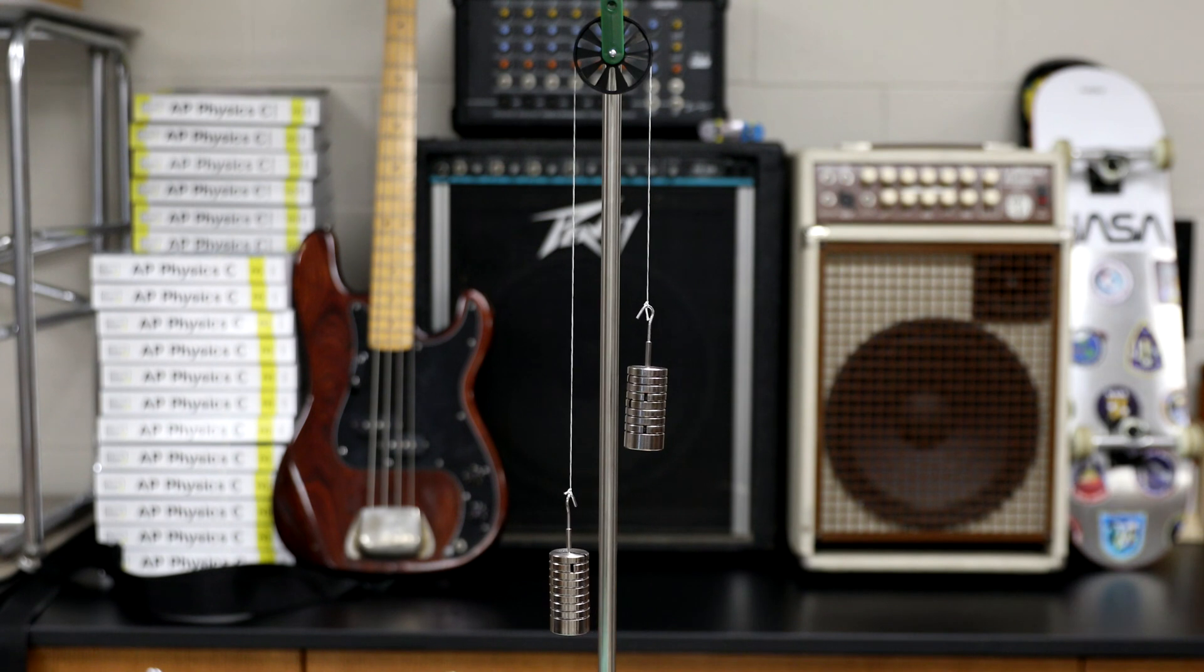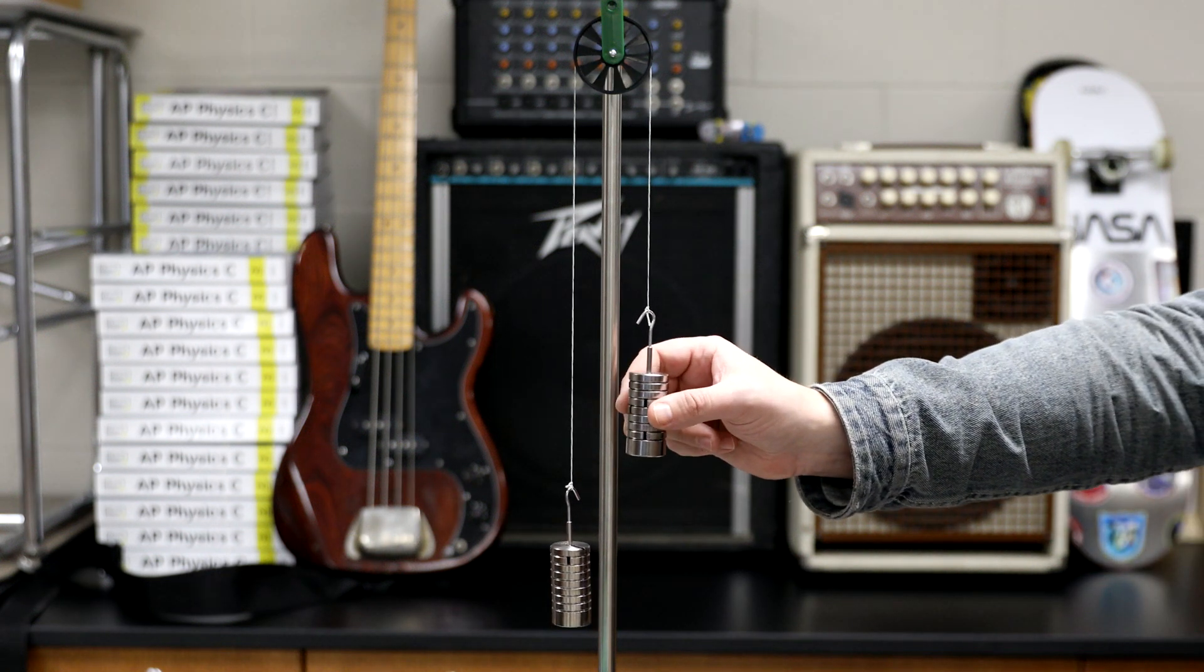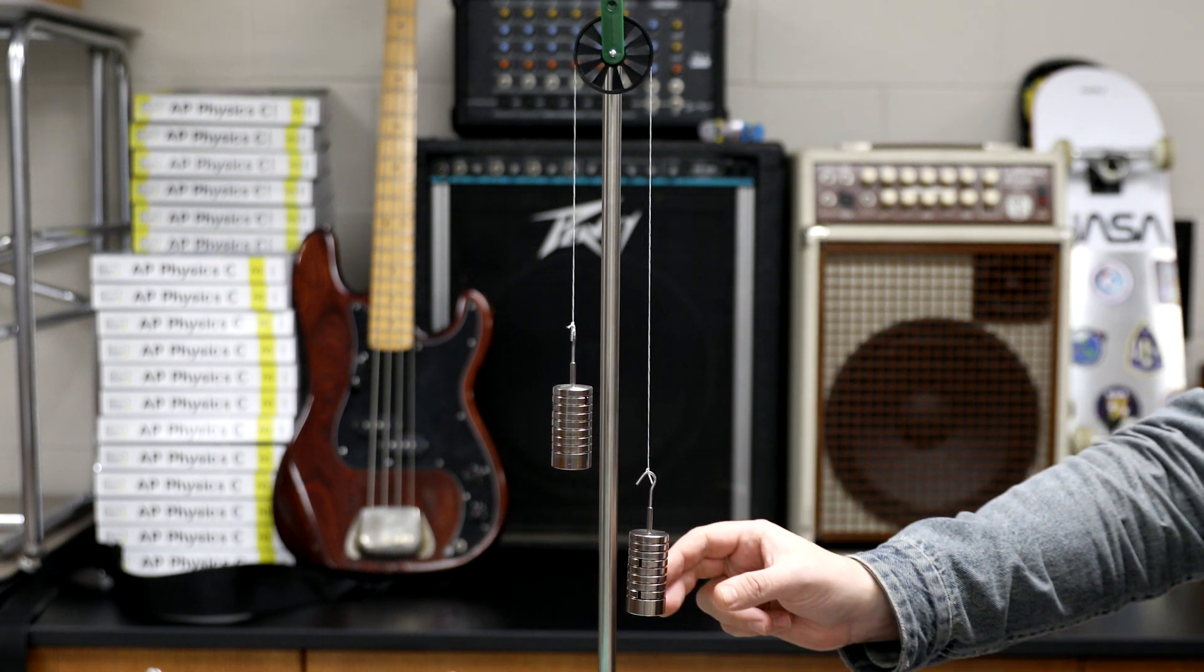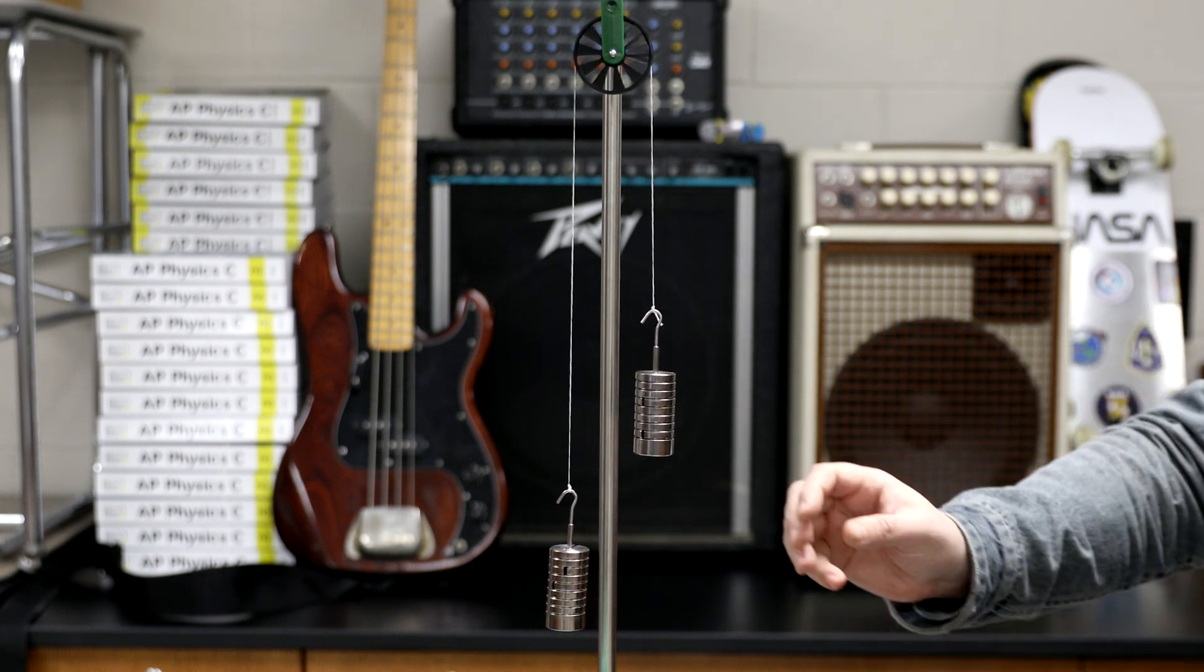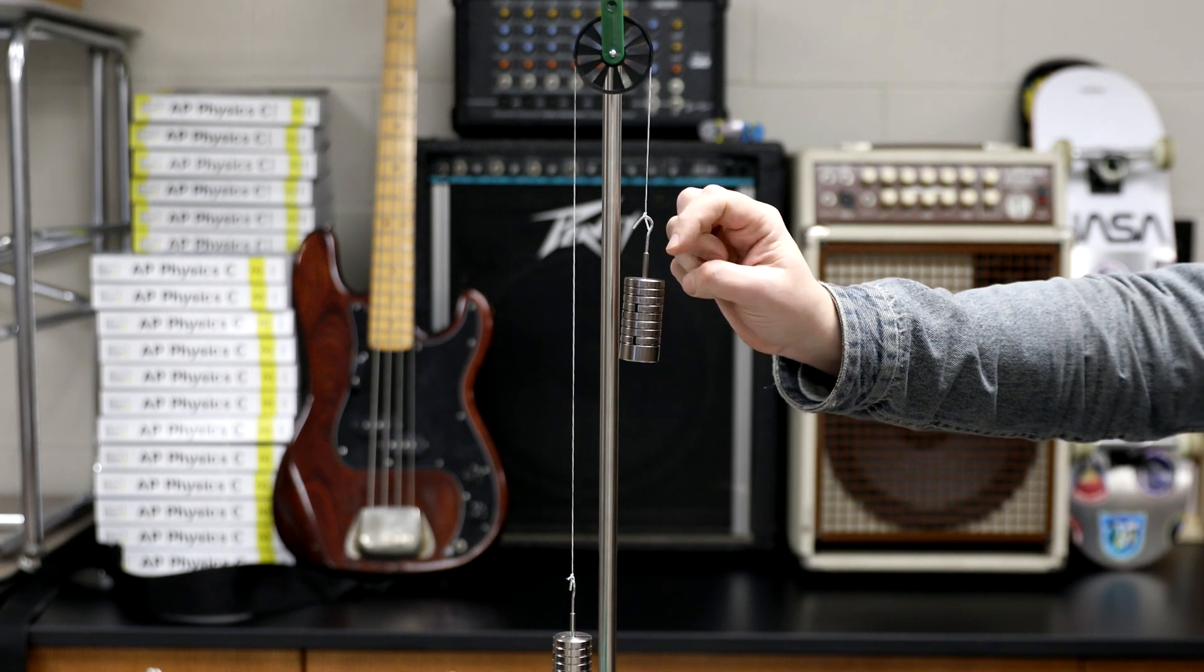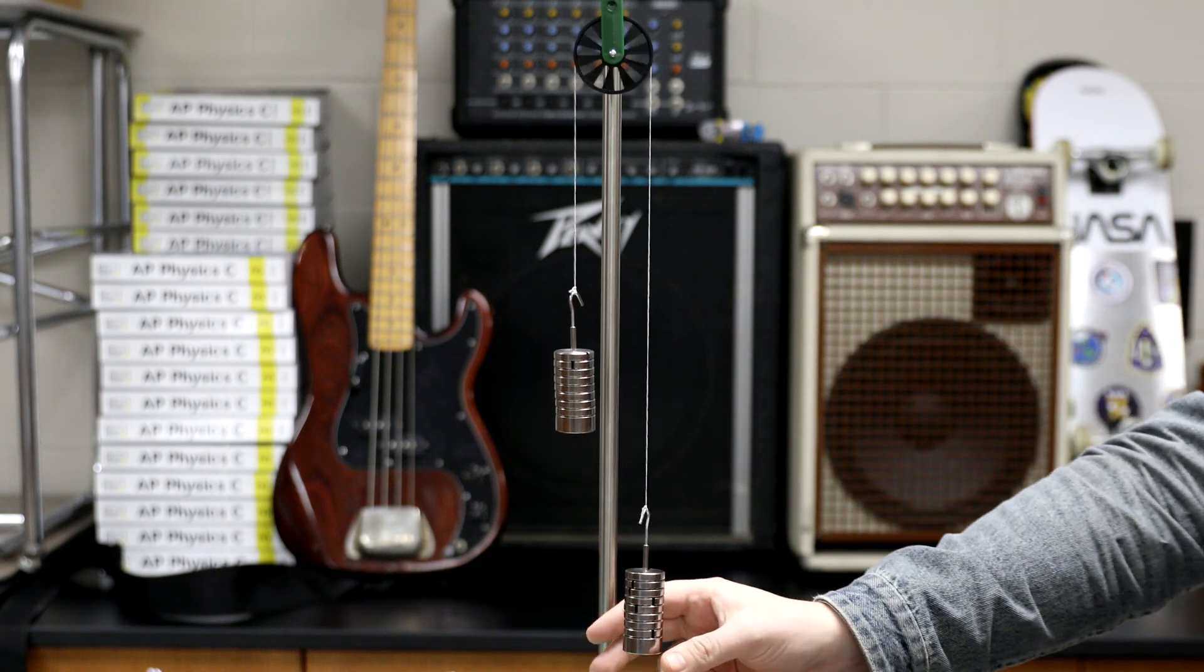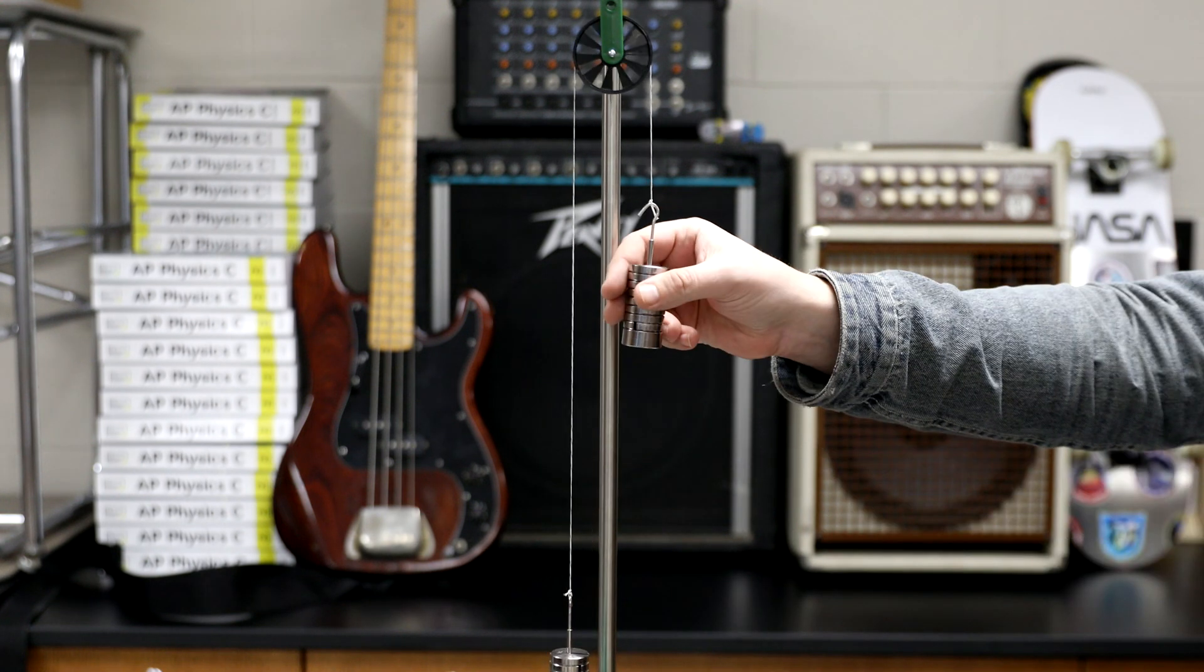So here we have two masses strung together over a pulley, and the masses are equal. That means that this system is in equilibrium. If you let the object just hang, then nothing moves, but if you allow one of the objects to move, then they both move together with a constant velocity.